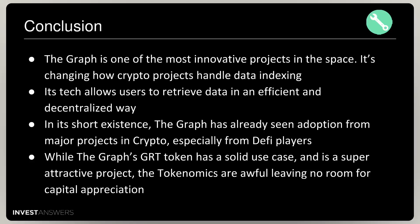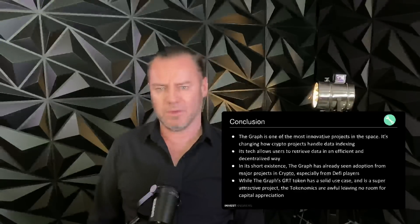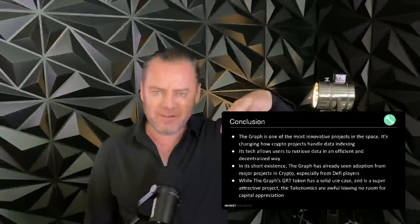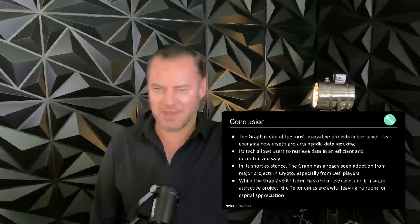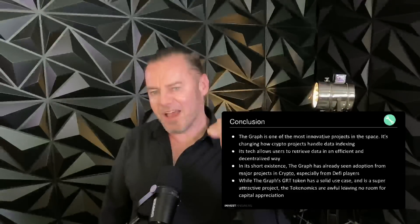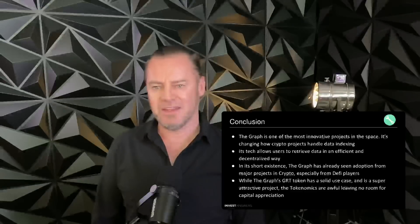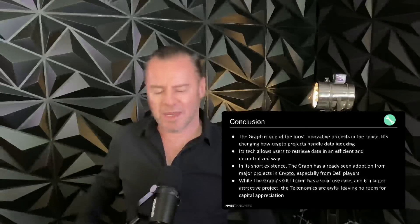The conclusion: The Graph is definitely one of the most innovative projects in the space, changing how crypto projects handle data indexing. Think of it this way — Chainlink is used to get real-world data onto the blockchain, Ethereum is used to store that data immutably, and The Graph is what's used to get the data off the blockchain and back into the real world, where people can use it to make decisions or take actions. That's the three-legged stool of how all these things operate together.